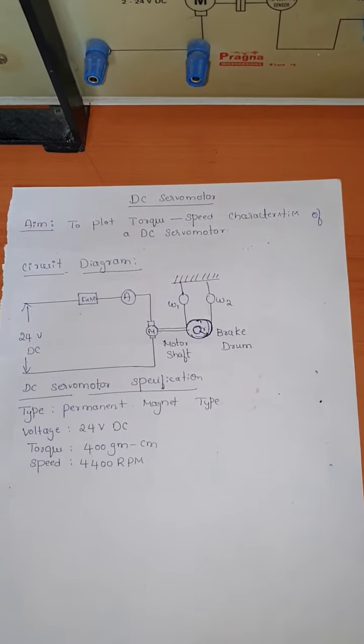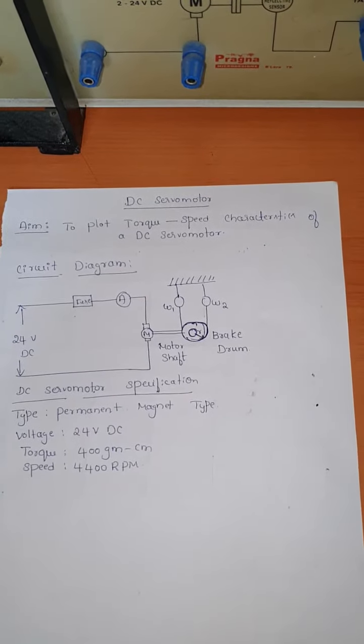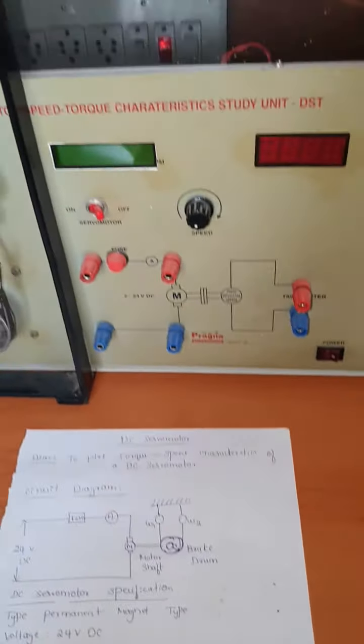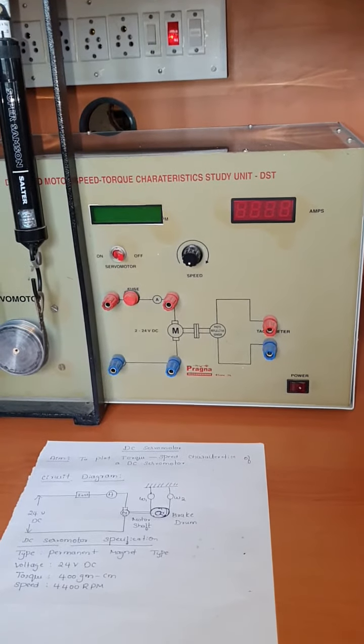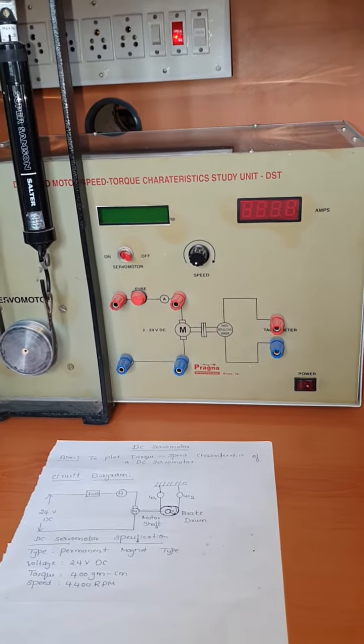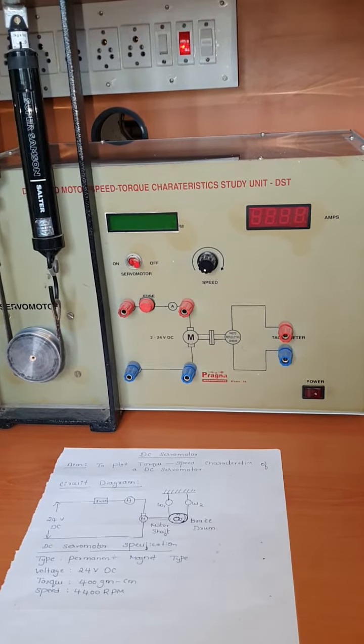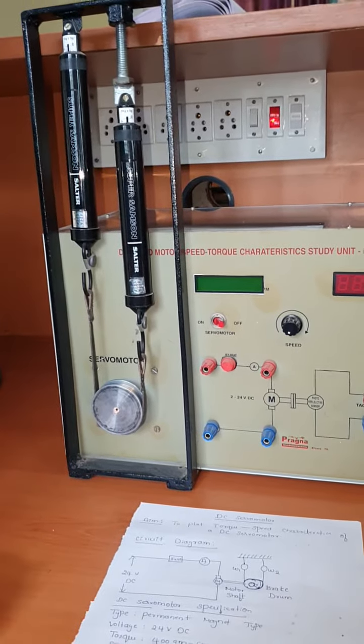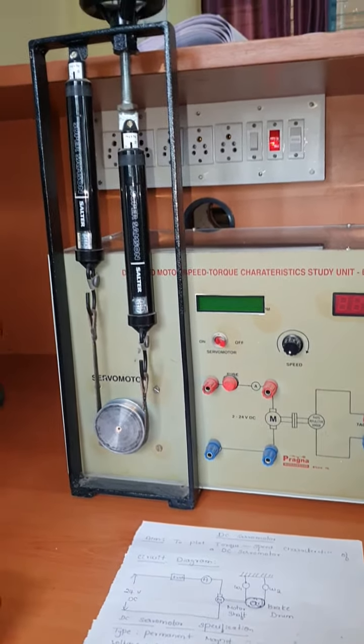Before proceeding to the experiment, we should know what the servomotor is. A servomotor is just like a normal motor which converts electrical input into mechanical output. The output produced is a mechanical variable like position, velocity, or acceleration. This servomotor enables automatic control of physical quantities like velocity, speed, and acceleration.